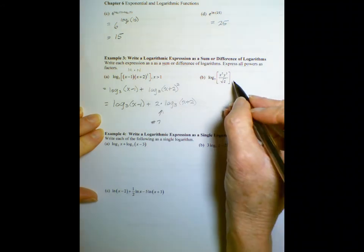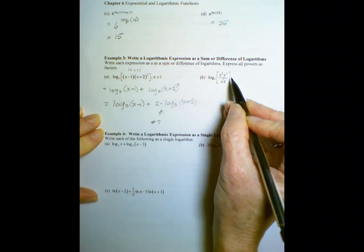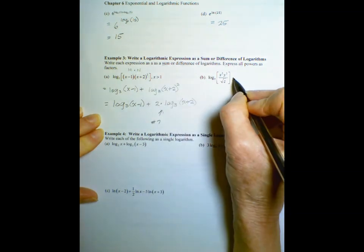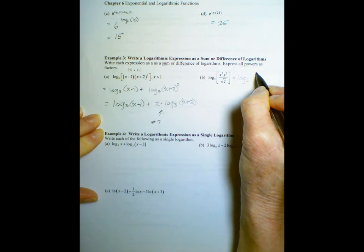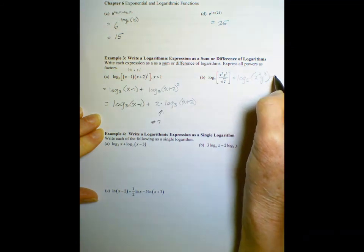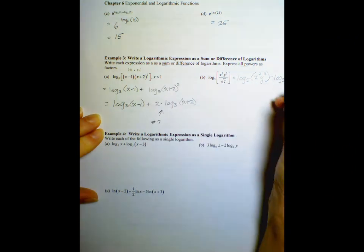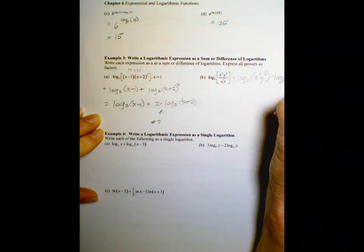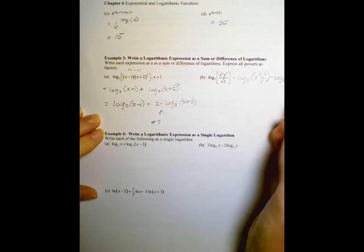Let's look at the next one. So this one we have an m over n, so this one's going to be a difference. So this will be the log base 5 of x squared y cubed minus the log base 5, and I'm not going to write that square root of z. I'm going to use 1 half power because we want to get rid of radicals when we deal with our logs.